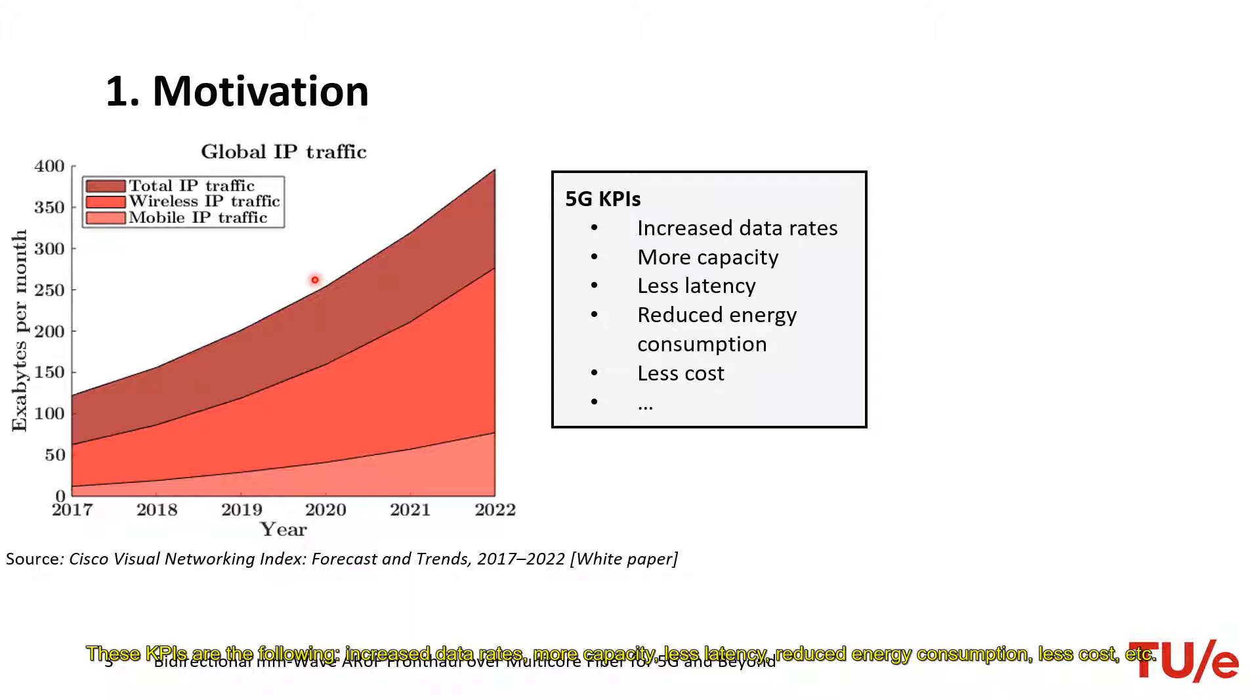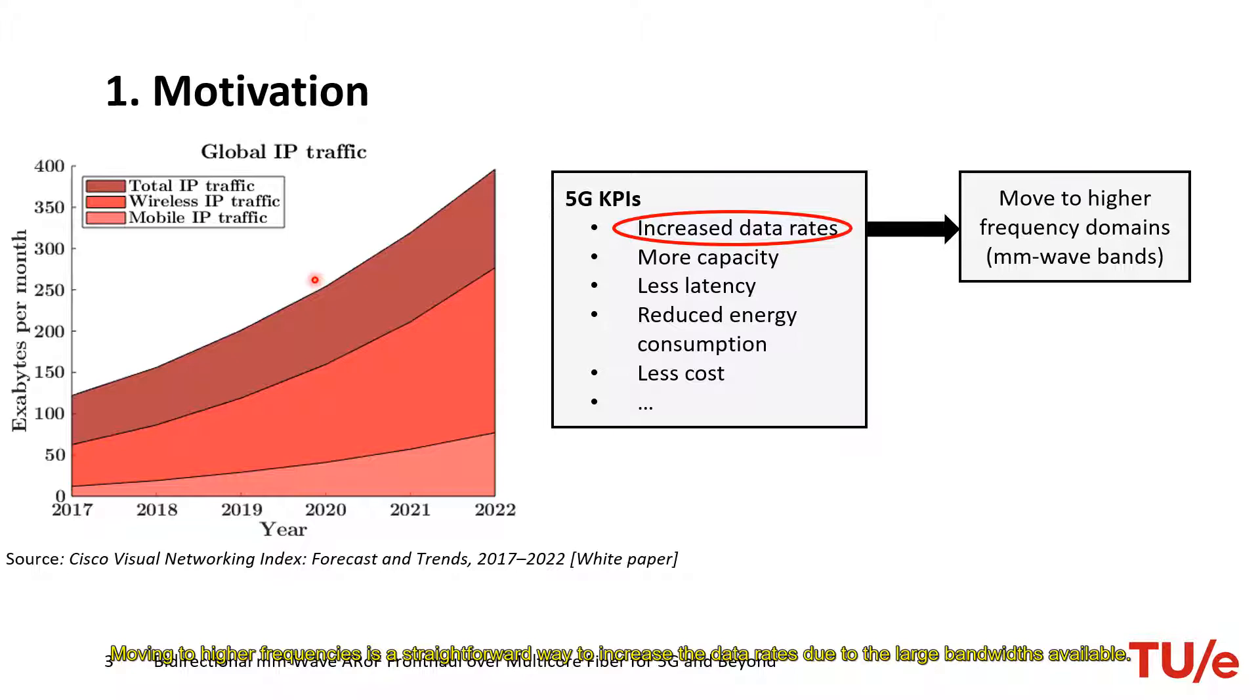These KPIs are the following: increased data rates, more capacity, less latency, reduced energy consumption, less cost, etc. Increasing data rate is one of the main 5G KPIs and this work is focused on these targets. Moving to higher frequency is a straightforward way to increase data rates due to the large bandwidth available. Millimeter waves are the next bands on the market to become operational.